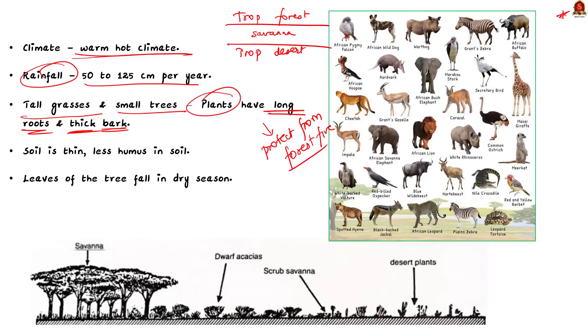The soil in the savannah is not very deep and so there is not a lot of humus in it. Humus is the dark organic matter which makes the soil fertile. So, due to the lack of humus, the soil in the savannah is not as rich for plant growth as in other biomes. In the dry season, which is the period of less rainfall, the trees in the savannah shed their leaves. This helps them conserve water and survive the drier times. So, if you ever visit a savannah during the dry season, you might notice fewer leaves on the trees.